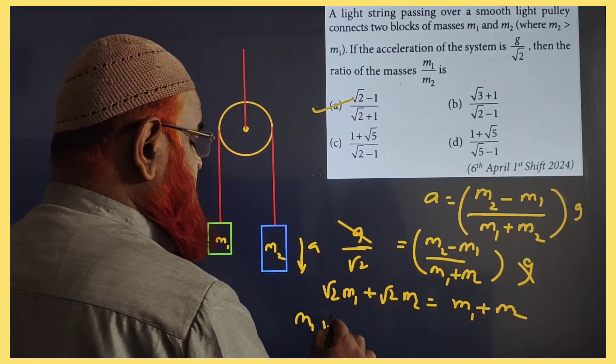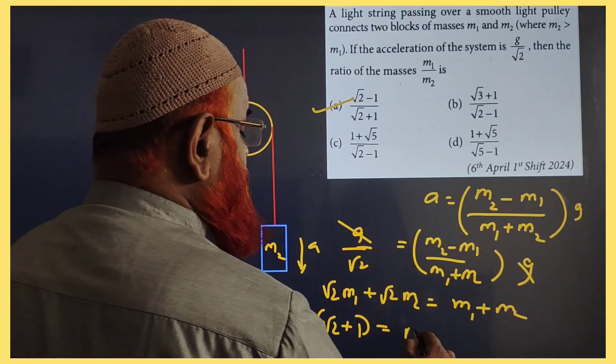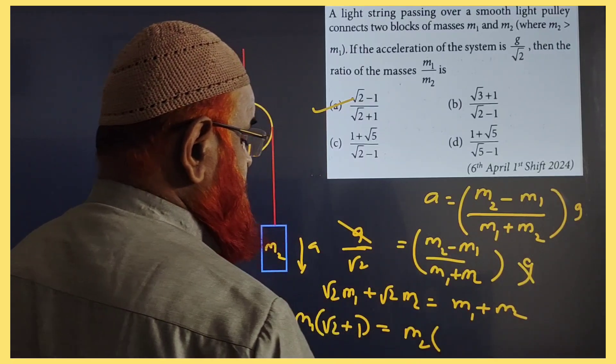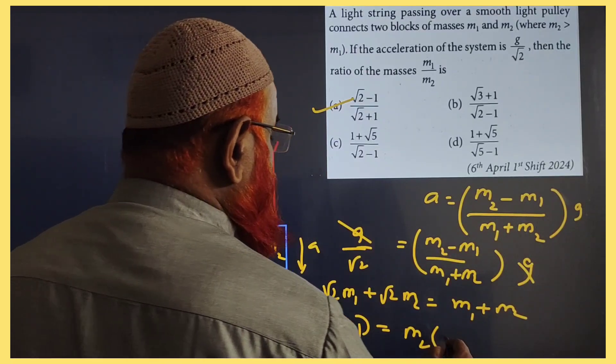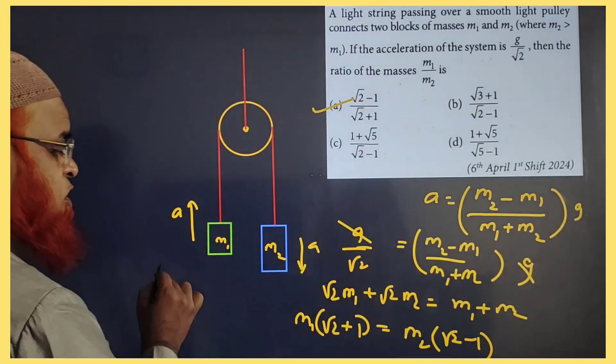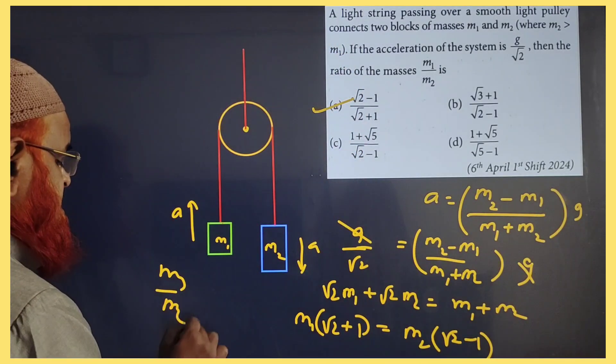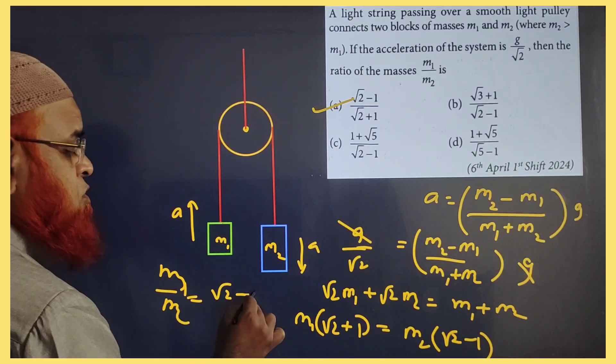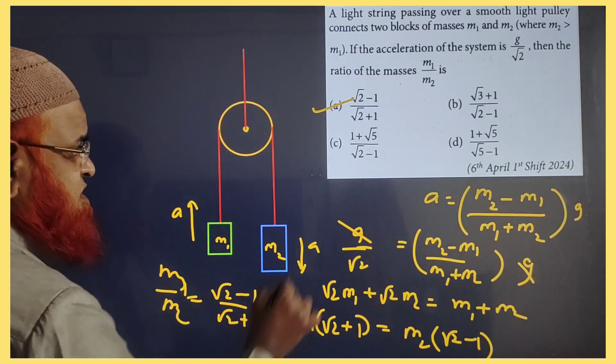You can common out M1 and you will be writing root 2 plus 1. You can common out M2, you can write root 2 minus 1. So therefore, we can write M1 by M2 is nothing but root 2 minus 1 by root 2 plus 1. This is going to be the answer.